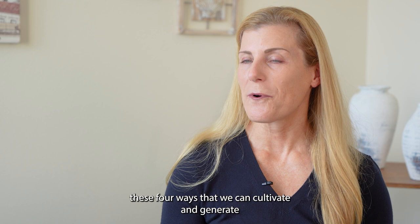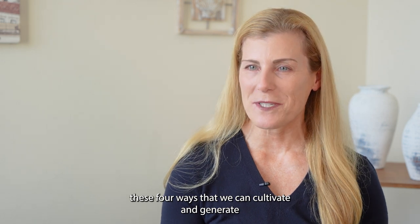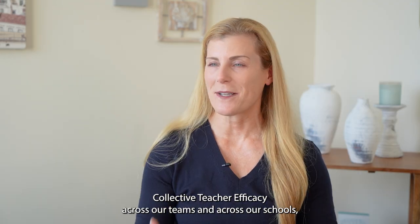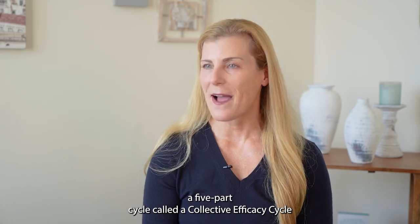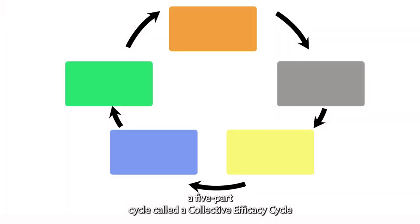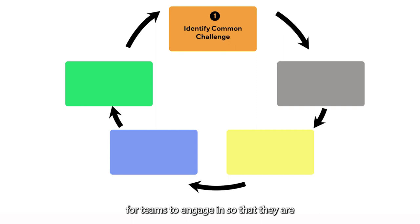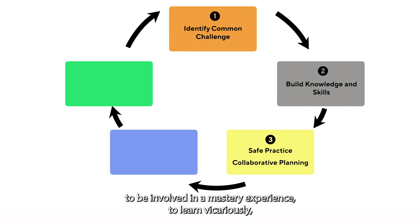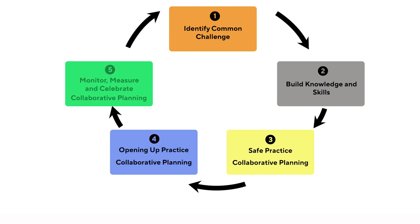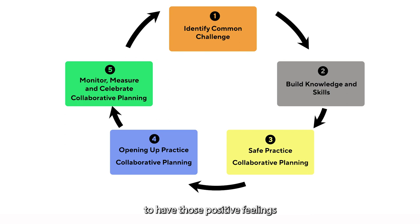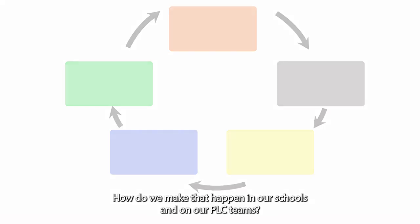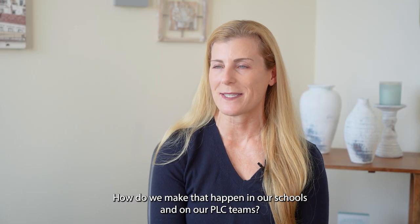Knowing that there are these four ways that we can cultivate and generate collective teacher efficacy across our teams and schools, we have identified and developed a five-part cycle called a collective efficacy cycle for teams to engage in, so that they are creating those conditions for mastery experience, vicarious learning, social persuasion, and positive feelings as they work in teams. How do we make that happen in our schools and on our PLC teams?